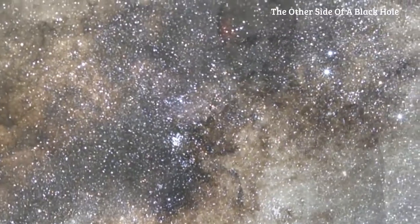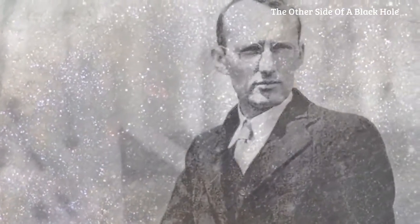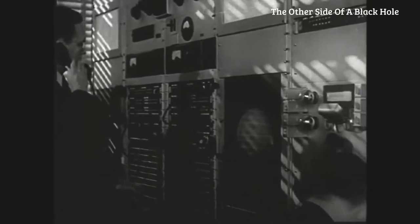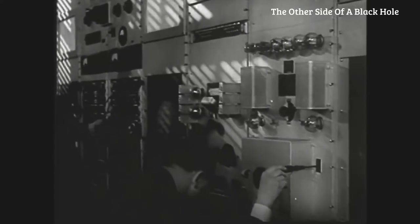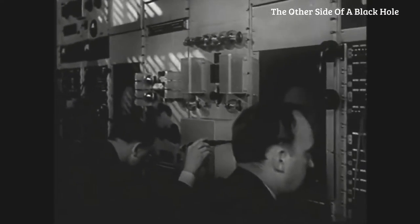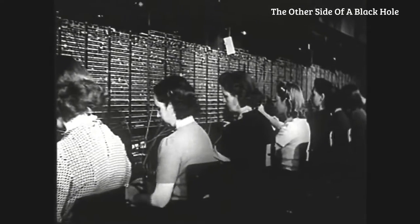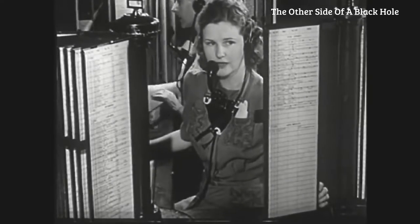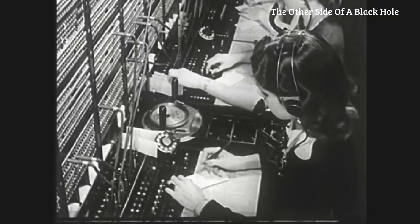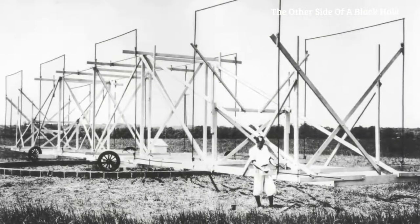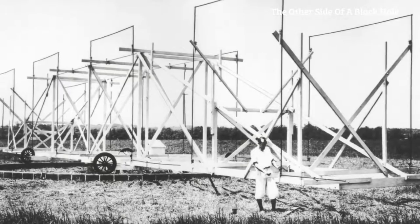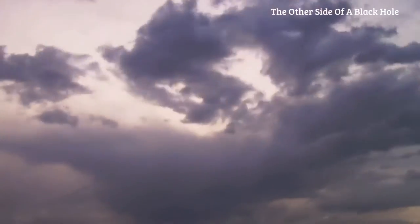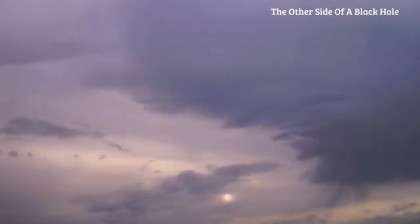The first to take notice was the physicist Carl Jansky, back in the 1930s. He had been asked by his employer, Bell Telephone Labs, to investigate sources of static that might interfere with what it saw as the killer app of its time, radio voice transmissions. Using this ungainly radio receiver, Jansky methodically scanned the airwaves. He traced most of the static to thunderstorms, nearby and far away.